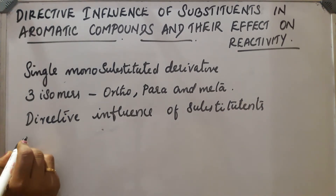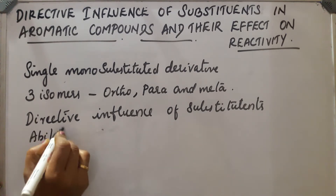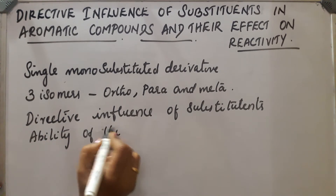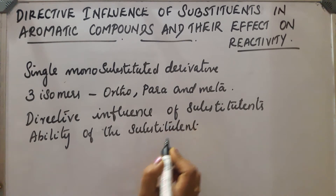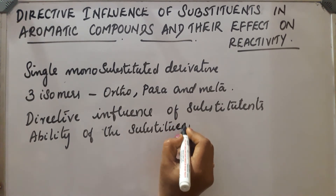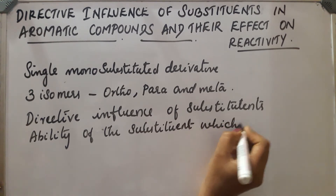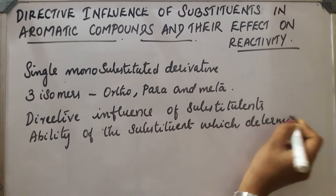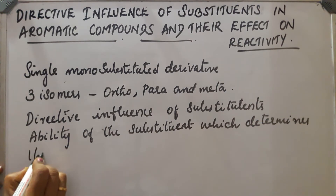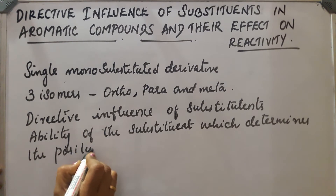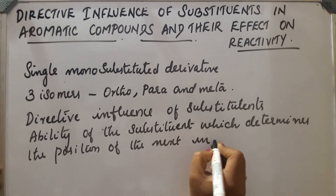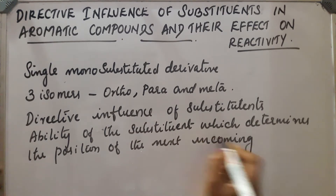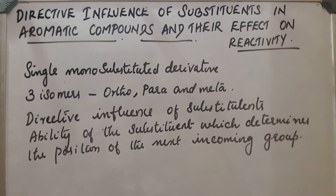Directive influence of substituents is the ability of the substituent which determines the position of the next incoming group. This ability of the group is called the directive influence of substituents.